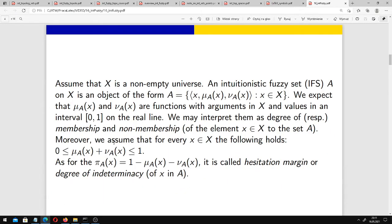Assume that X is a non-empty universe. An intuitionistic fuzzy set IFS A on X is an object of the following form. This is similar to the idea of fuzzy sets, but we have two functions: a membership function μ_A(x) and a non-membership function ν_A(x). They do not necessarily sum up to 1, although they sum up to a number not bigger than 1, as we can see here, and not less than 0.